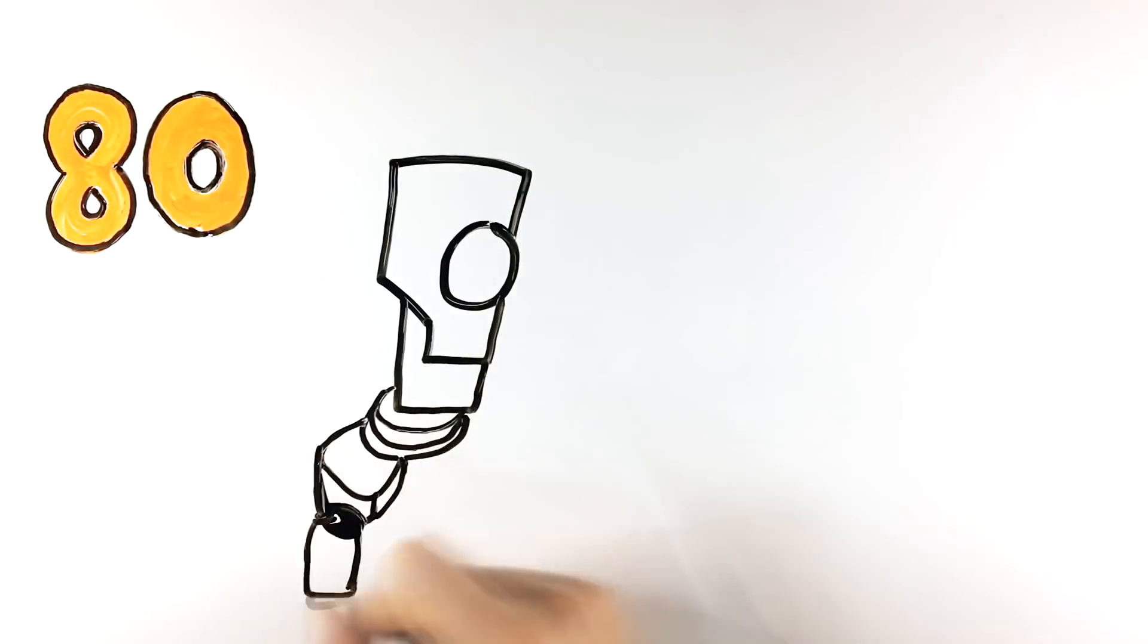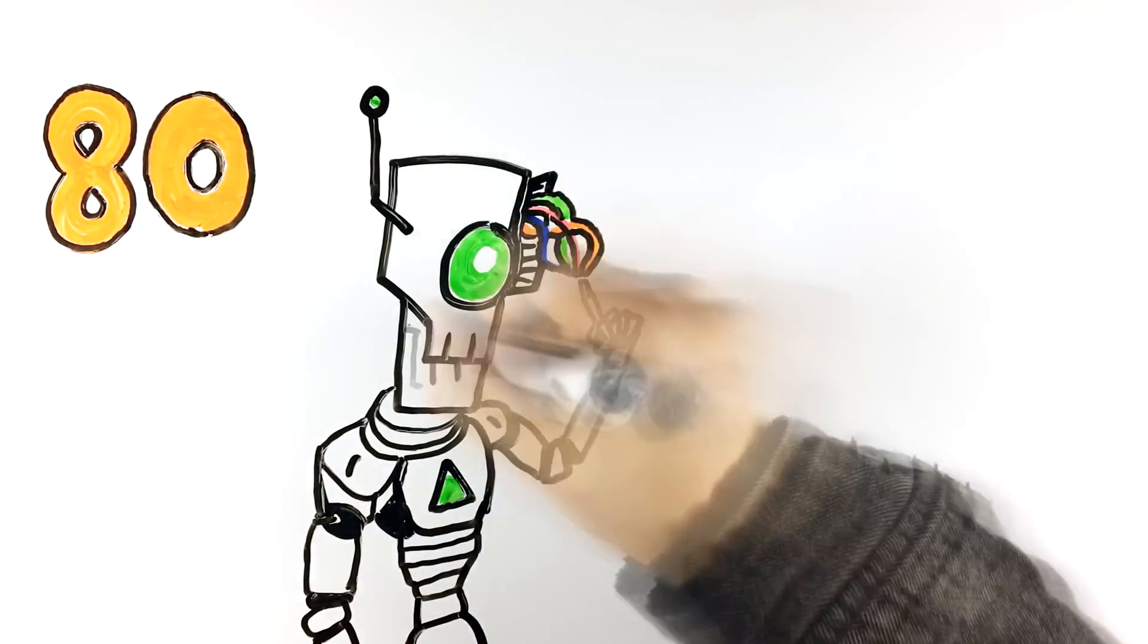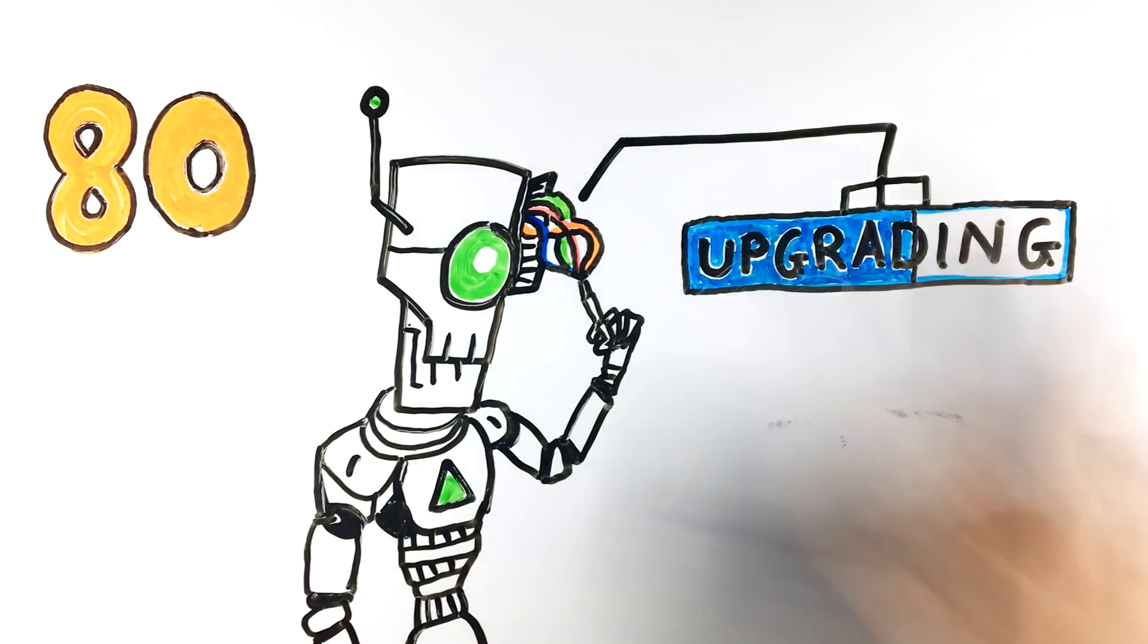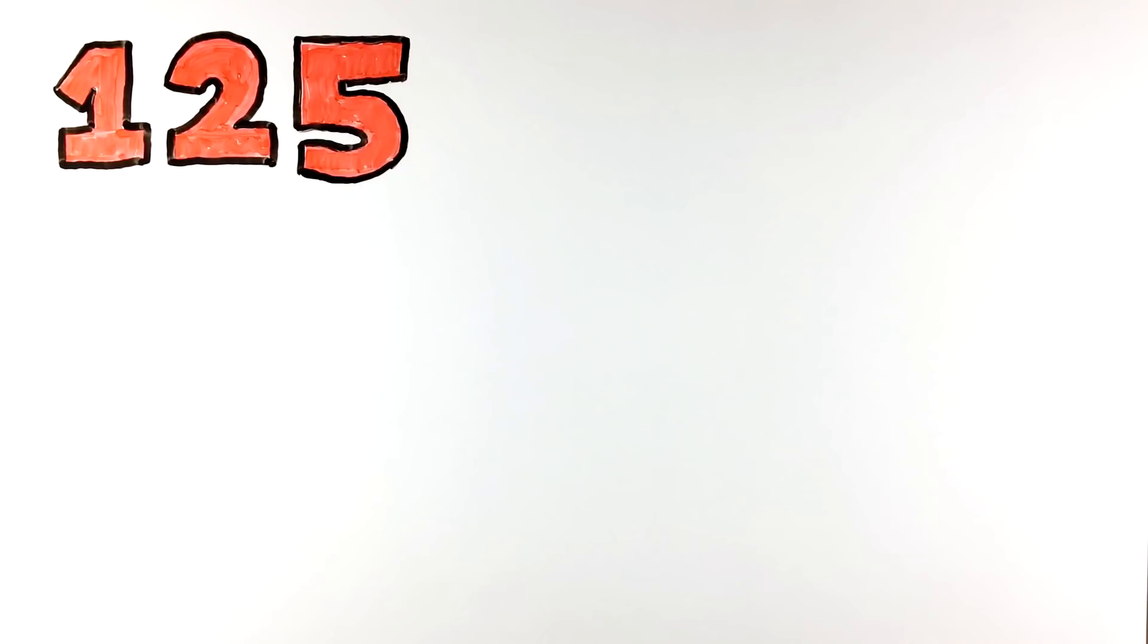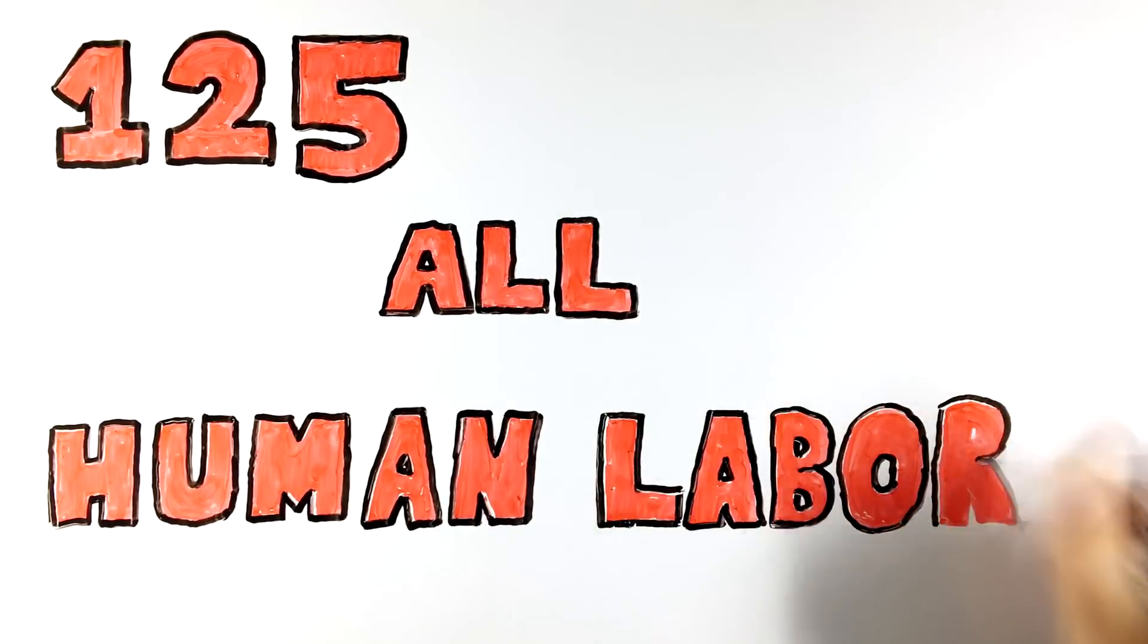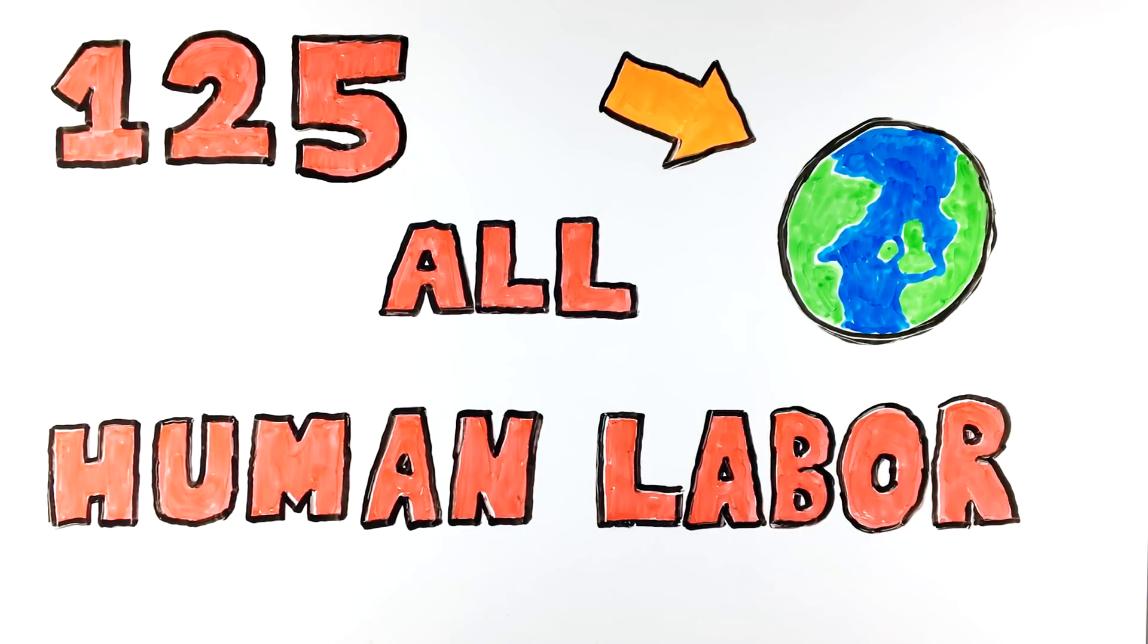In around 80 years, AI will research and improve itself and will no longer need us to advance. Then, in just 125 years, researchers estimate that AI will be fully capable of automating all human labor. Every single job on the planet.